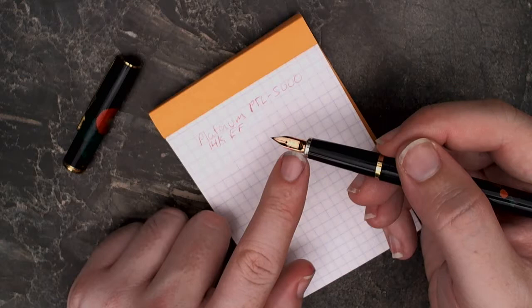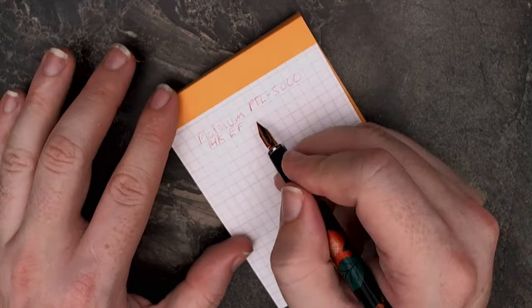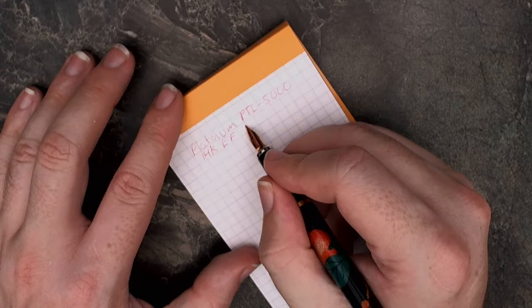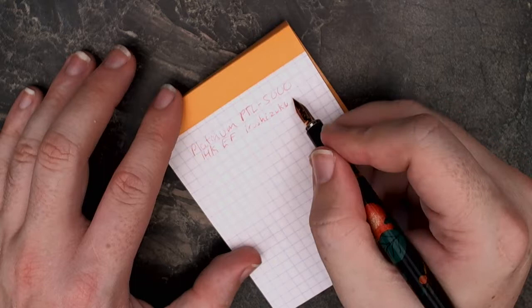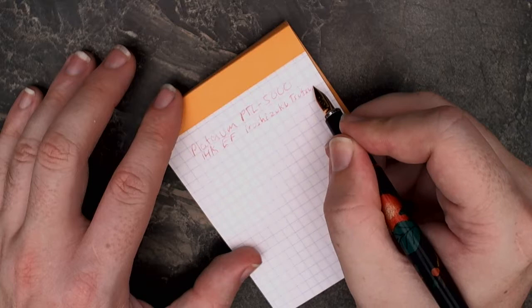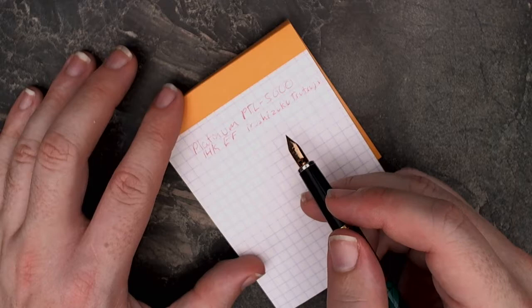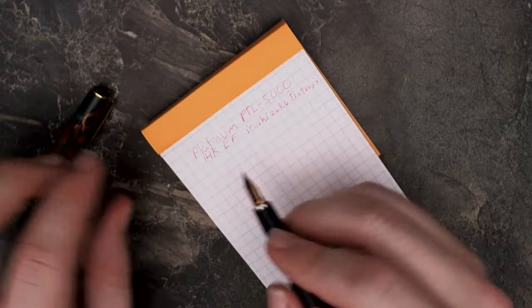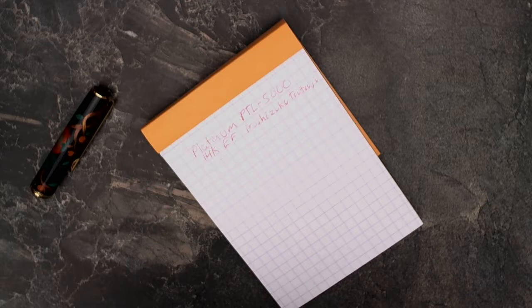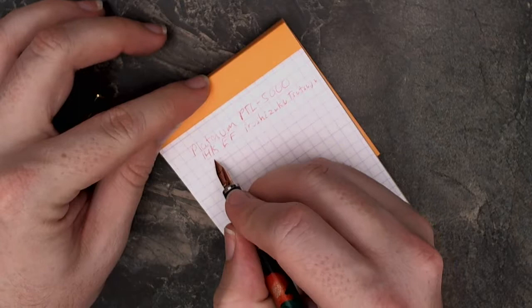It doesn't say extra fine right on it, but it's sort of in kanji. Right now I've got Iro Shizuku Tsutsuji, which I believe is Japanese for azalea. It's a little dry at the moment. I don't normally write with it.